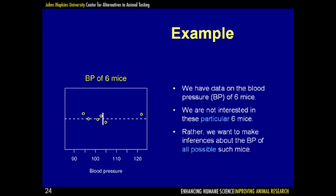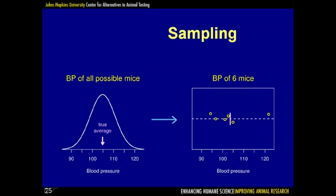Imagine we have the blood pressure of six mice. We're not interested in these six particular mice — rather, we want to make some statement about the blood pressure of all possible such mice. Statisticians think about this through sampling. We imagine the distribution of blood pressure of all possible mice and are particularly interested in the average blood pressure of all possible mice. But instead of seeing this whole distribution, we observe six draws from it — the blood pressure of our particular six mice.